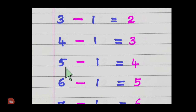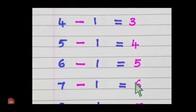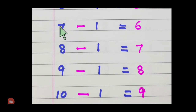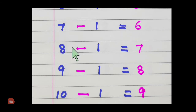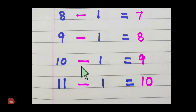Five minus one equals four. Six minus one equals five. Seven minus one equals six. Eight minus one equals seven. Nine minus one equals eight. Ten minus one equals nine.